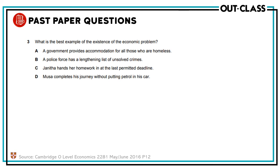What is the best example of the existence of the economic problem? A: a government produces accommodation for all those who are homeless. B: a police force has a lengthening list of unsolved crimes. C: Janita hands her homework in at the last permitted deadline. D: Musa completes his journey without putting petrol in his car. The correct option is B, because the basic economic problem is unlimited wants and limited resources — wants can't be met by those limited resources. In all other scenarios, the deadline is met, the journey has ended, and the government has managed to find accommodation, so scarcity is not being depicted.